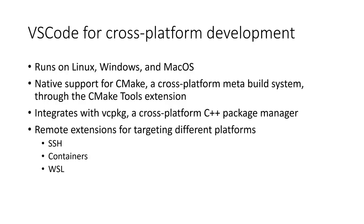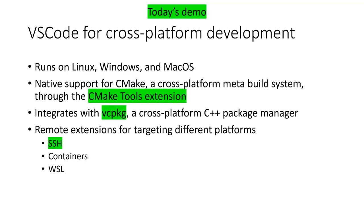If you're using CMake and vcpkg in your project, that sets you up to configure your project easily in VS Code across Windows, Linux, and Mac. VS Code also enables targeting different platforms through remote development extensions — the SSH extension, the containers extension, and the Windows Subsystem for Linux extension. In today's demo, I'm going to show you how to use the CMake Tools extension to configure, build, and debug your CMake projects, how I've integrated vcpkg with CMake Tools to manage SuperTux's dependencies, and then use the Remote SSH extension to show it all works the same on Linux using GCC and GDB.